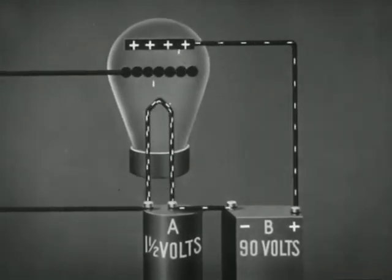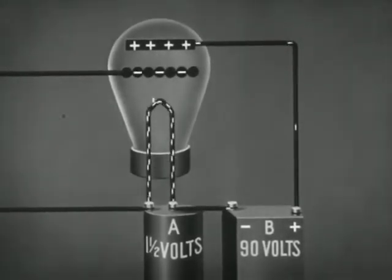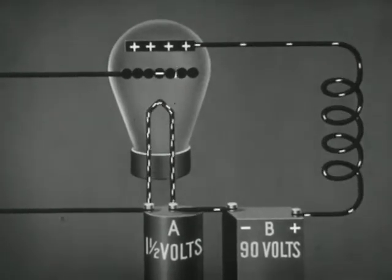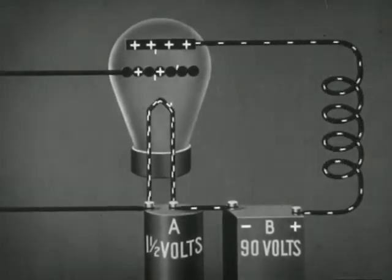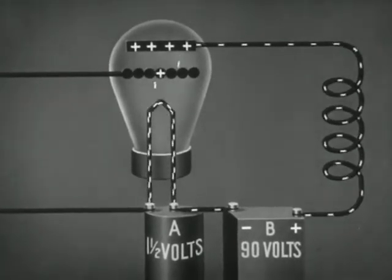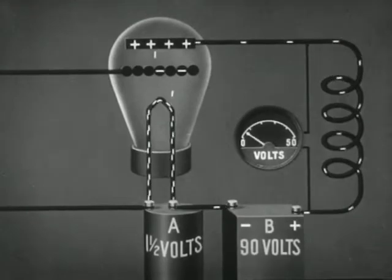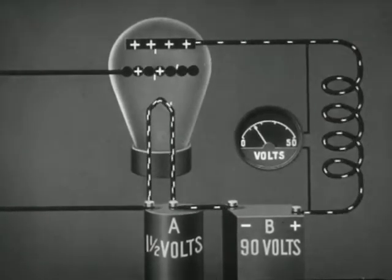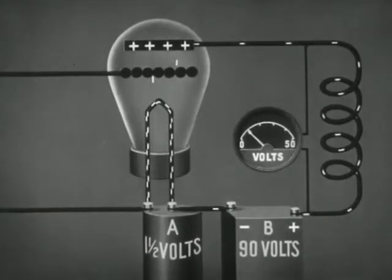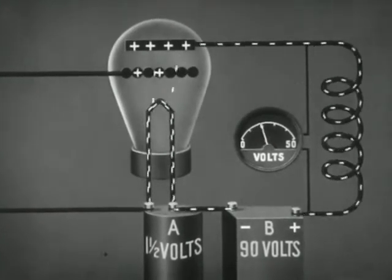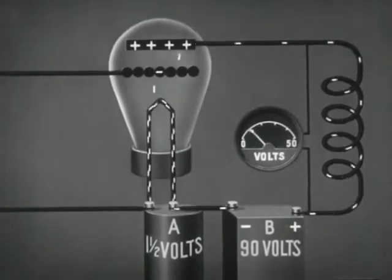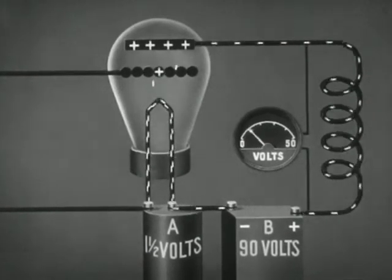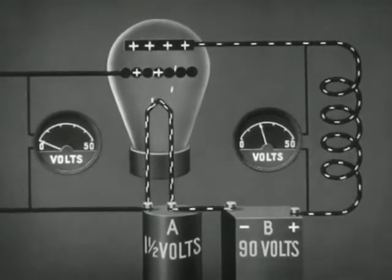The plate of the amplifier tube is connected to a load supplied by the primary winding of a transformer. As the plate current increases, the voltage across the primary increases. Thus, the voltage across the primary coil will vary with the amount of plate current. These voltage variations are much greater than the voltage changes in the grid circuit.